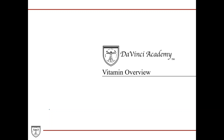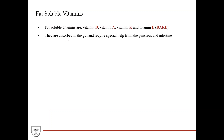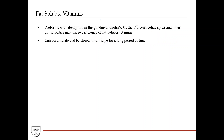First, an overview of vitamins in general. The fat-soluble vitamins are vitamins D, A, K, and E — you can remember them as DAKE. They are absorbed in the gut and require special help from the pancreas and the intestines, absorbed the same way fats are through the intestinal mucosa. This can create problems if patients have difficulty absorbing fats.